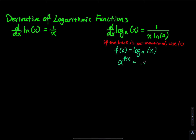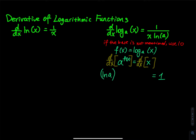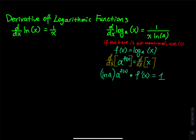Next, we take the derivative on both sides with respect to x. The derivative of x equals 1. The derivative of a raised to a power uses the exponential derivative formula: ln(a) times a to the x. Since the exponent is a function, we apply the chain rule, multiplying by f′(x). Dividing both sides gives f′(x) = 1 divided by ln(a) times a^(f(x)).